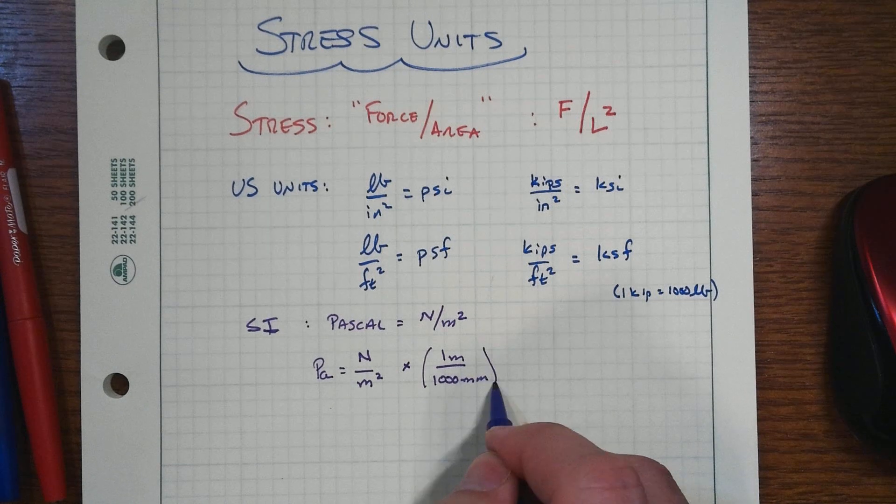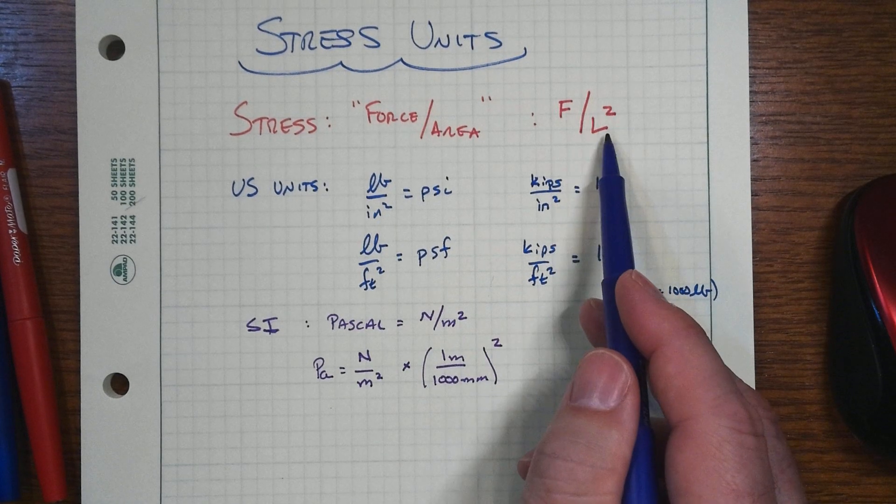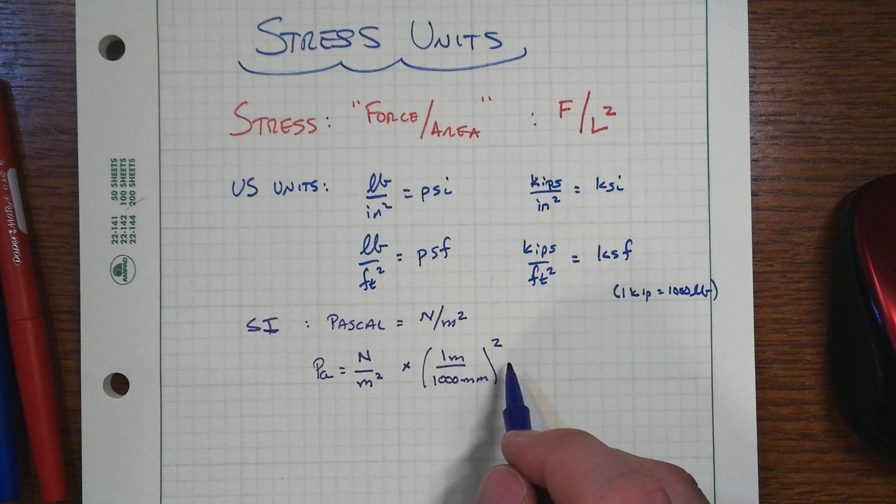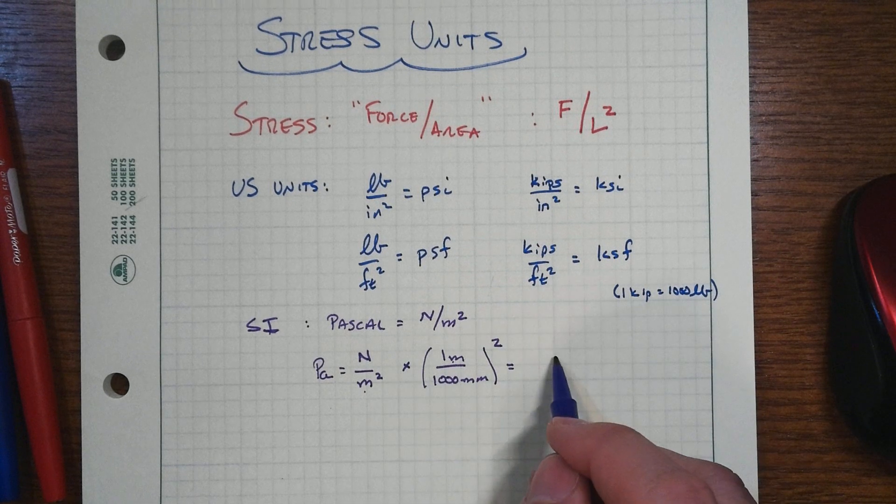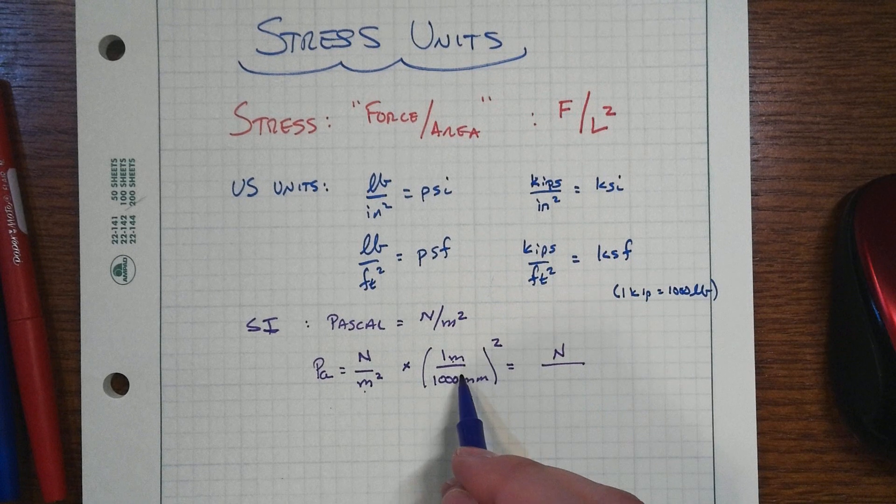Of course, to make that appropriate conversion here, again, to have force over length squared, then we'll square that little conversion there. And so you'll have the meters squared. We'll divide through the meters squared here. So you'll have a newton over, this is 10 to the third squared.